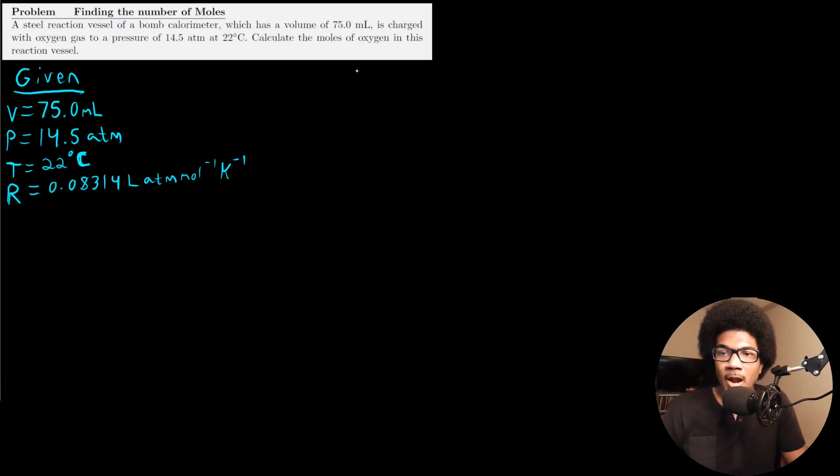First we want to convert our volume to liters. So we got 75 milliliters. We want to convert that to liters. We know that in one liter, we have 1000 milliliters. So that's going to give us a volume of 0.075 liters. For temperature, we know that 22 degrees C, to convert to Kelvin, you just add 273.15. So that's going to give you 295.15 Kelvin for your temperature.